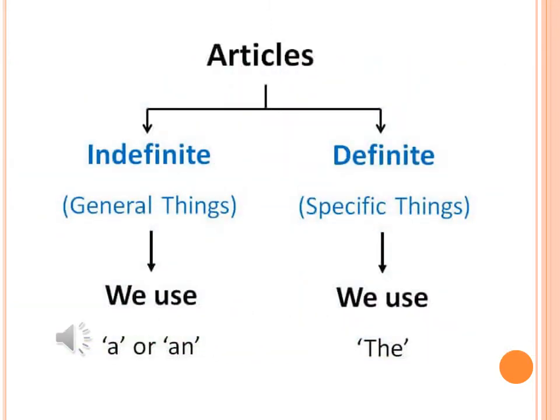Articles can be indefinite and definite. Indefinite articles we use when we talk about general things, so we use articles a or an. Definite articles we use when we talk about specific things, so in this case we use article the.